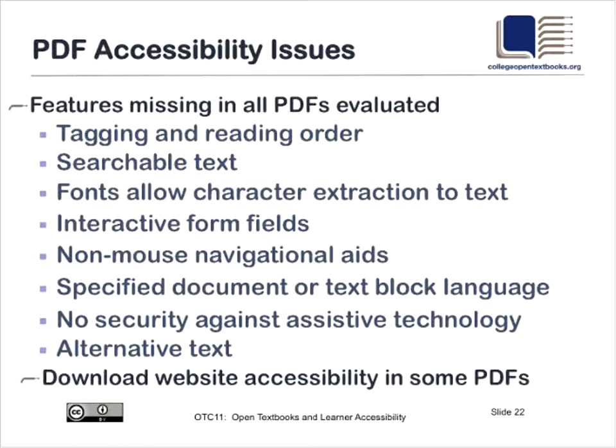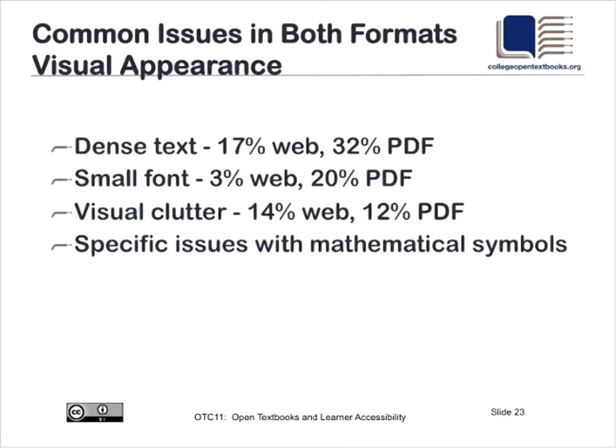We also noted that because you access a PDF from a website, even if the PDFs had been totally accessible, if the website was inaccessible for any reason, that made the PDF also inaccessible. The issues common to both web and PDF formats came from the authors and were more stylistic. There were specific issues with mathematical symbols: if you're using a font that doesn't support the mathematical symbols and you put them in as an image without properly supporting that image, the assistive technology can't read the symbols. When you have a text in mathematics, statistics, or science that uses a lot of these symbols, that can be a real problem.